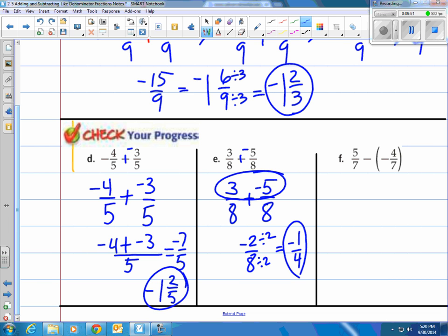And the last one. Now, notice it has a subtraction of a negative. You remember what that looks like. We change this to an addition. We also change that to an addition. So, really, you're just adding 5 sevenths and 4 sevenths. When you do that, you have 9 sevenths, which is equal to 1 and 2 sevenths.